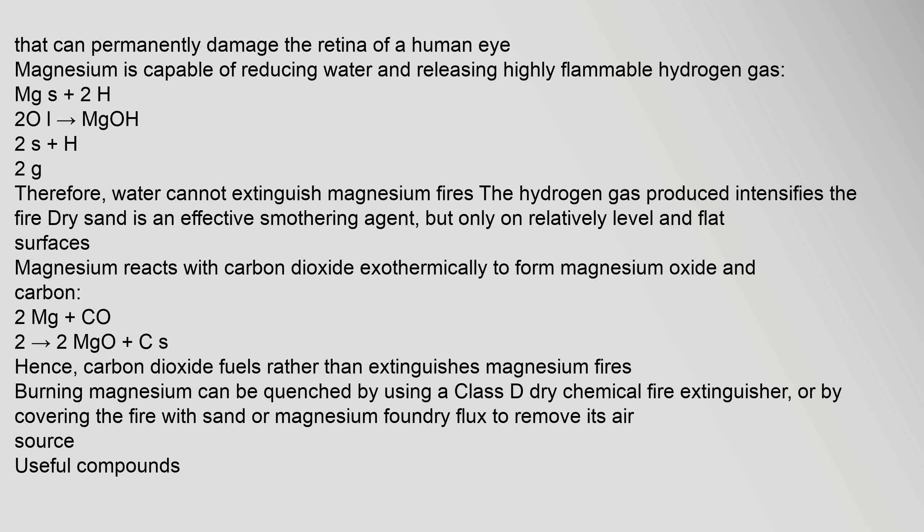The hydrogen gas produced intensifies the fire. Dry sand is an effective smothering agent, but only on relatively level and flat surfaces. Magnesium reacts with carbon dioxide exothermically to form magnesium oxide and carbon: 2Mg + CO₂ → 2MgO + C. Hence, carbon dioxide fuels rather than extinguishes magnesium fires. Burning magnesium can be quenched by using a Class D dry chemical fire extinguisher, or by covering the fire with sand or magnesium foundry flux to remove its air source.